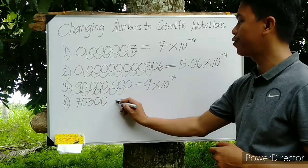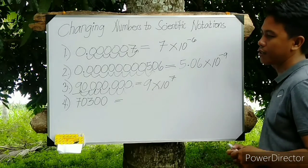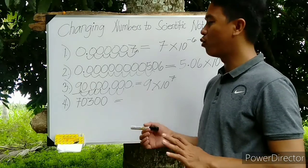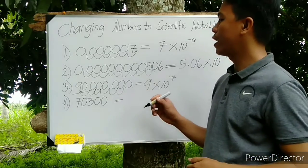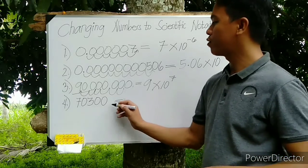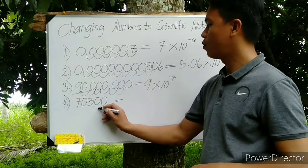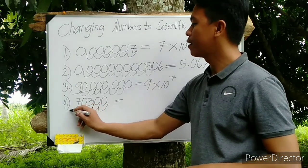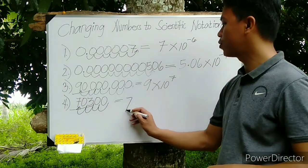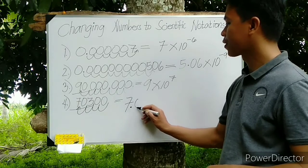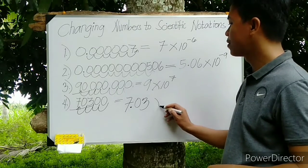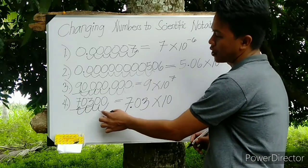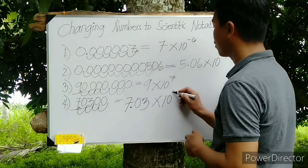For number 4, this is also a large number. It's because it's more than 1. So we will move from right to left. Let's start here: 1, 2, 3, 4. Then the value of A is equal to 7.03 times 10 to the power of 1, 2, 3, 4—the power of 4.